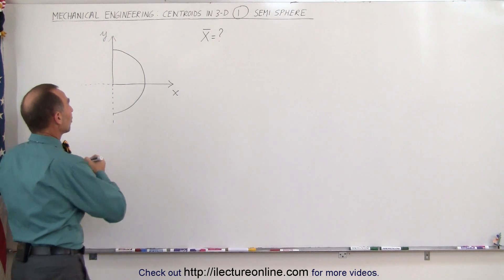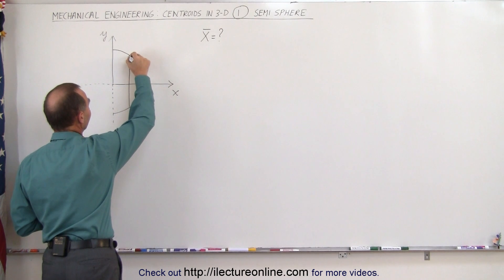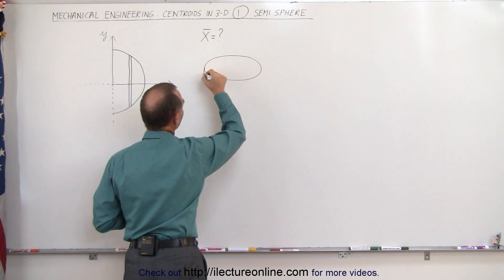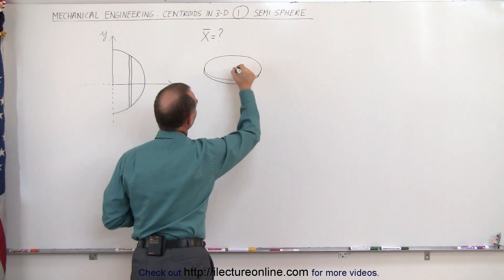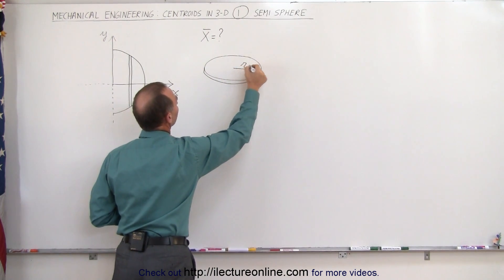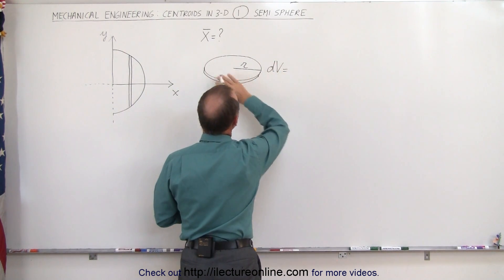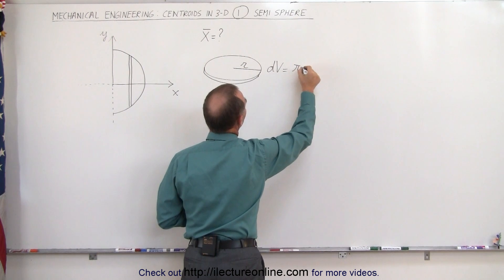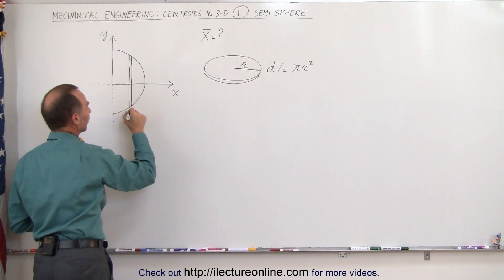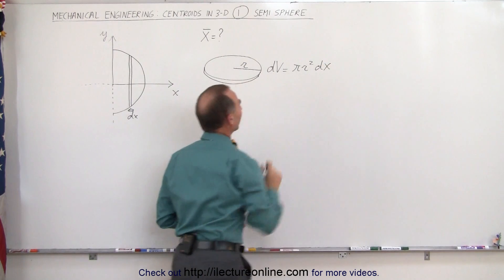The best way to do that is to start out with a small little volume slice. We're going to take a little slice like this — if we draw that little slice, it will look like a little disk. That little disk will have a certain radius; let's call that radius small r. The volume element dv is going to be equal to the area, which is π times little r squared, times the thickness, which is dx, because it is in the x direction.